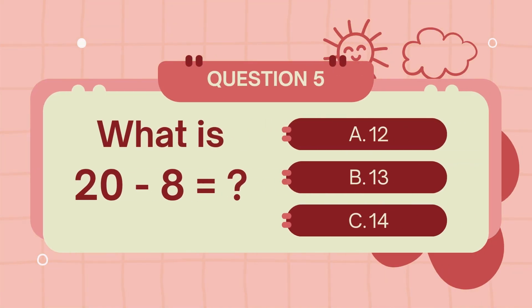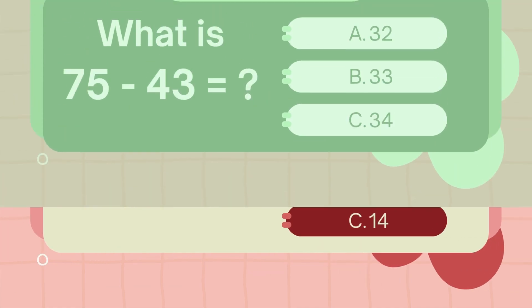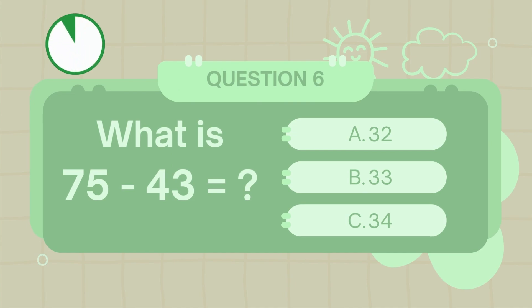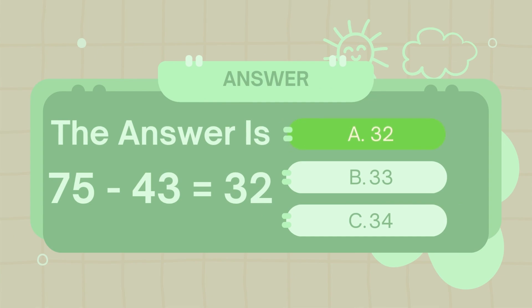What is 20 minus 8? The answer is 12. What is 75 minus 43? The answer is 32.